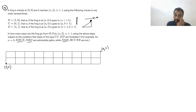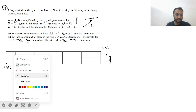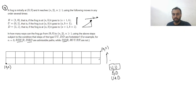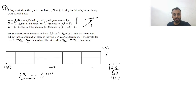From (0, 0) we have to reach (n, 2). We observe that we have to go up by exactly two units. We can achieve this either by using two U steps, two D steps, or one U and one D step. For Case 1, using two U steps, we need n R steps to move n units to the right.